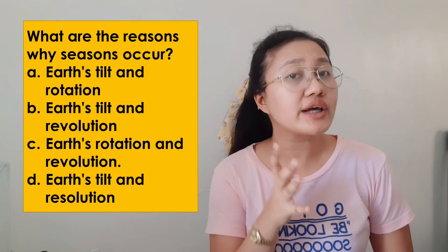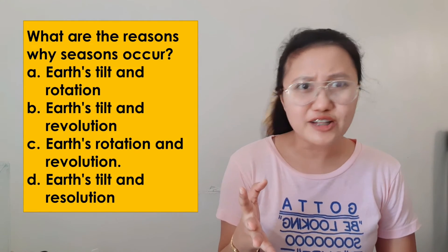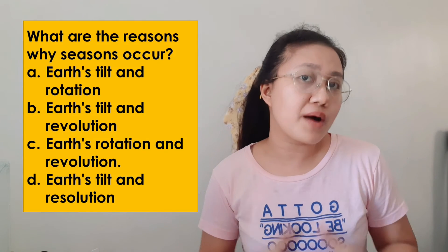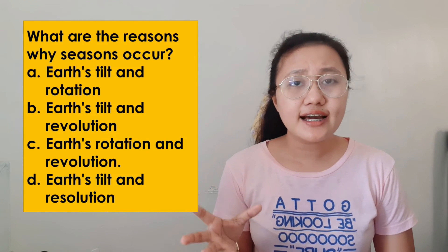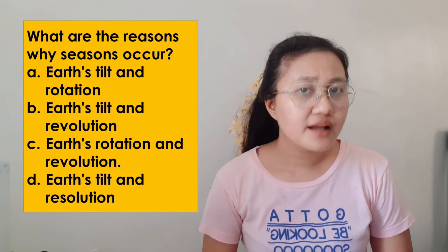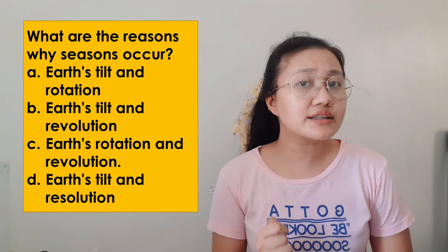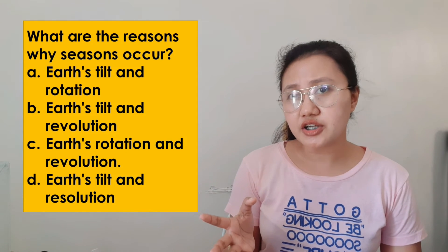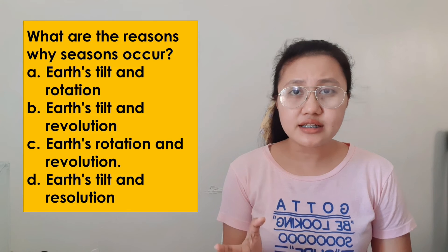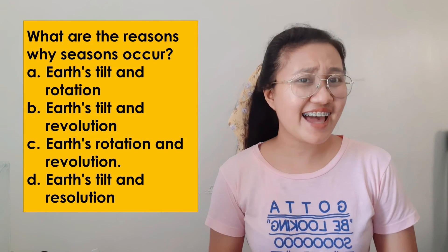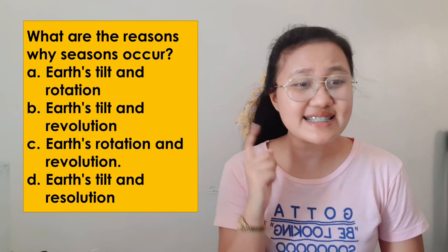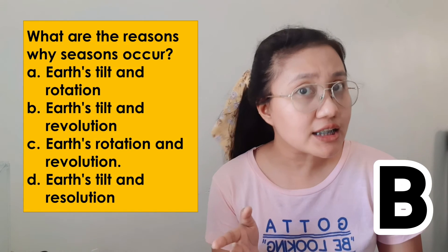Let us have another assessment. Number one: what are the reasons why seasons occur? Is it A — Earth's tilt and rotation? B — Earth's tilt and revolution? C — Earth's rotation and revolution? Or D — Earth's tilt and resolution? The correct answer is letter B — Earth's tilt and revolution.